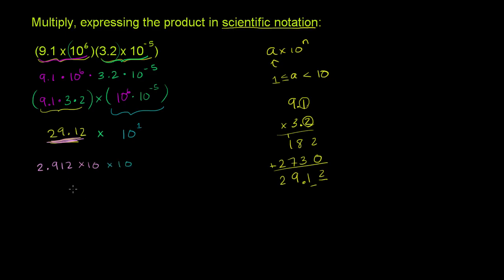And so to finish up this problem, we get 2.912 times 10 times 10, or 10 to the first times 10 to the first. Well, what's that? Well, that's going to be this part right over here. That's just 10 squared. So it's 2.912 times 10 to the second power. And we are done.